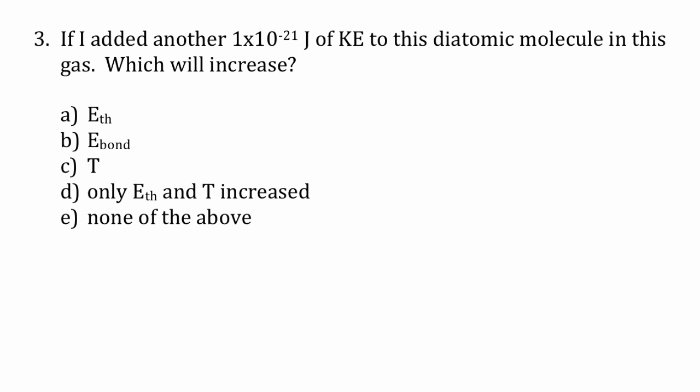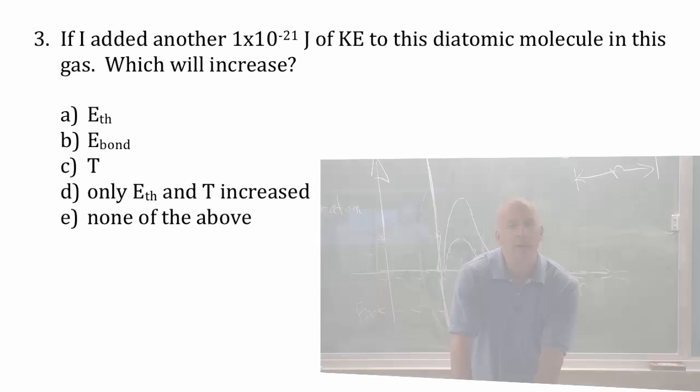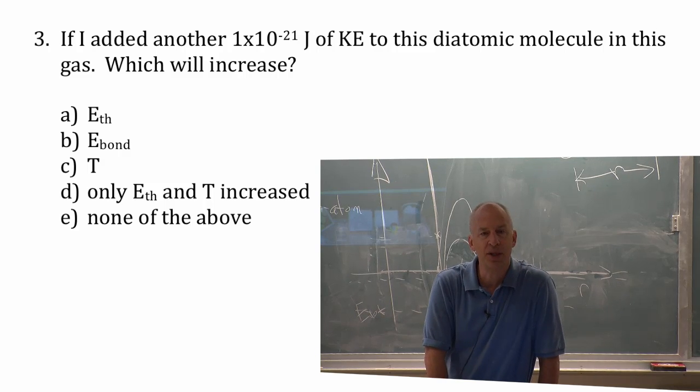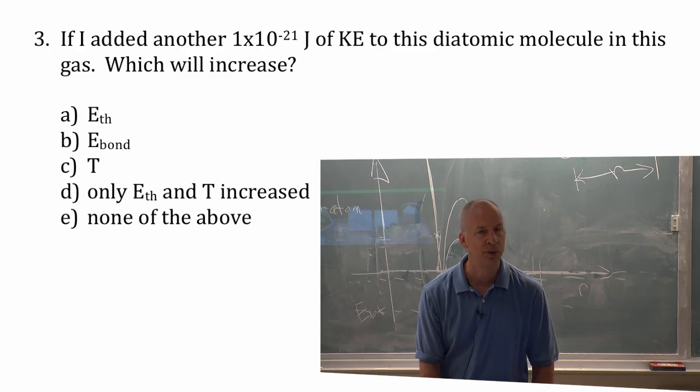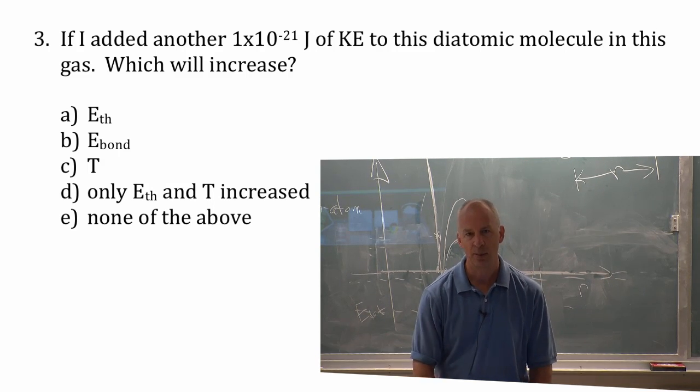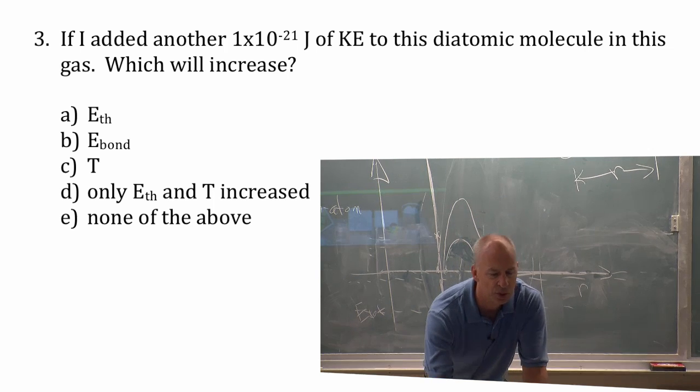So right now the total energy is about negative 3 times 10 to the minus 22, in other words, negative 0.3 times 10 to the minus 21. And I'm going to add 1 times 10 to the minus 21, so I'm going to turn the total energy into positive 0.7 times 10 to the minus 21.